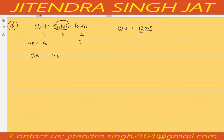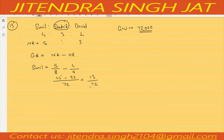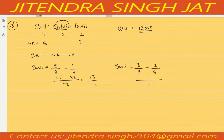The formula of gaining ratio is new ratio minus old ratio. For Sunil: new ratio is 5/8, old ratio is 4/9. Taking LCM of 8 and 9, which is 72: (9×5 = 45) minus (8×4 = 32) = 13/72. For David: new ratio is 3/8, old ratio is 2/9. Taking LCM 72: (9×3 = 27) minus (8×2 = 16) = 11/72.